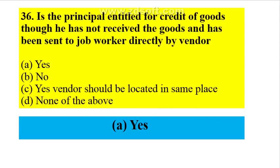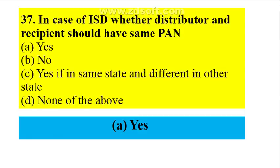Is the principal entitled for ITC on inputs sent for job work if goods sent are returned within one year? Yes. Is the principal entitled for credit of goods though he has not received them and they were sent directly to the job worker by the vendor? Yes. In the case of an input service distributor, the distributor and recipient should have the same PAN — yes.